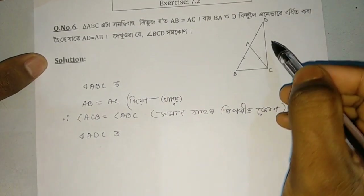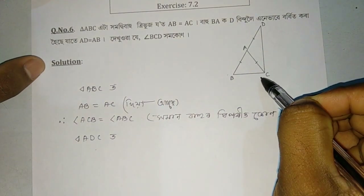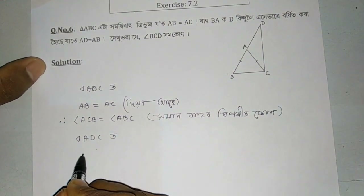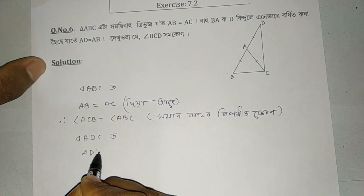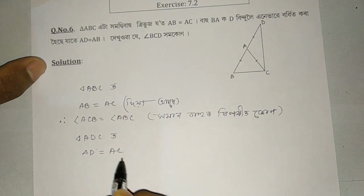So AD is A. AD, or AC — AD equals AC, AQ.